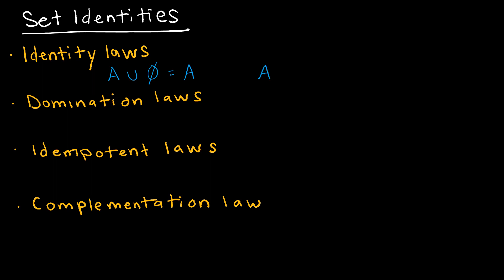If I take A intersect U, we're saying A combined with everything from U, but it's the intersection so it's only things contained in both A and U. It makes sense that I end up with A, because it's only elements contained in both A and the universe, which would be just those in A.